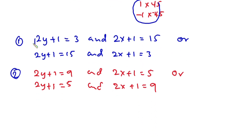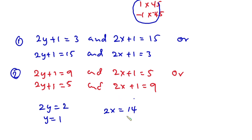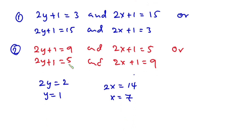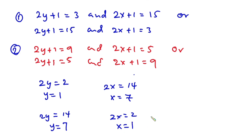From Case 1, first sub-case: 2y + 1 = 3 gives 2y = 2, so y = 1. Then 2x + 1 = 15 gives 2x = 14, so x = 7. Second sub-case: 2y + 1 = 15 gives 2y = 14, so y = 7. Then 2x + 1 = 3 gives 2x = 2, so x = 1.